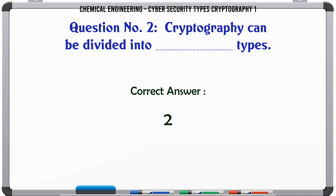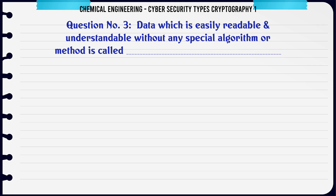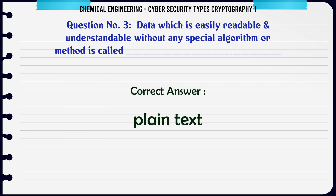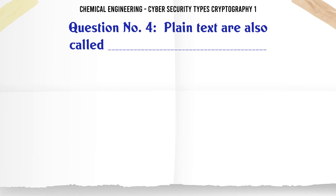The correct answer is 2. Data which is easily readable and understandable without any special algorithm or method is called: A) Cipher text, B) Plain text, C) Raw text, D) Encrypted text. The correct answer is Plain text.